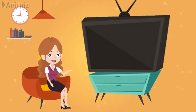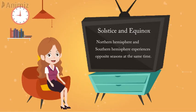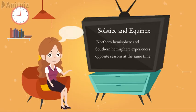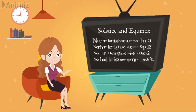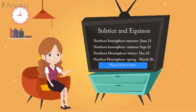Let's revise all these things about solstice and equinox in short. The northern and southern hemispheres experience opposite seasons at the same time. The northern hemisphere experiences: summer season on June 21st, autumn season on September 22nd, winter season on December 22nd, and spring season on March 20th.